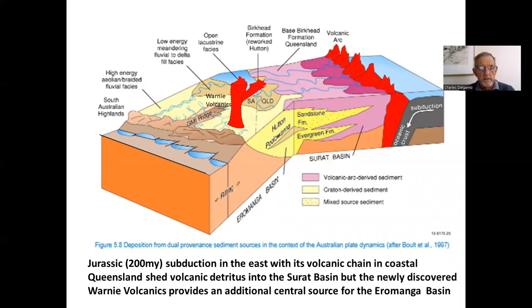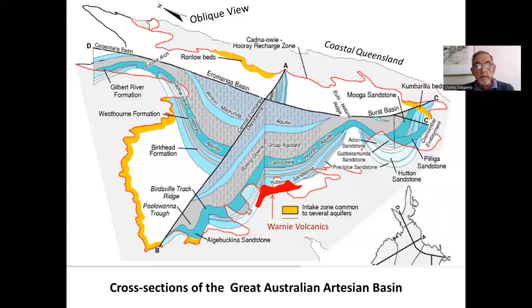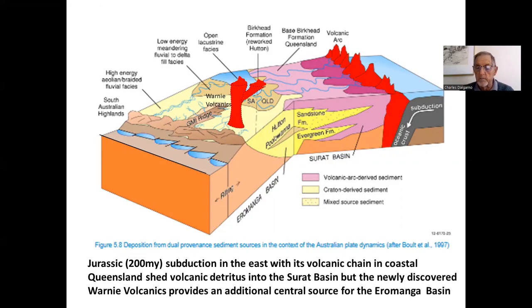In the Jurassic, about 200 million years ago, there was subduction in the east, just ceasing, and its volcanic chain in coastal Queensland shed detritus into the Surat Basin. However, the newly discovered Warnie volcanics provide an additional central source. Yet another cutaway shows an oblique section through Queensland, from the Gulf of Carpentaria across to southern central Queensland, illustrating the basin volcanic contribution to the sediments.